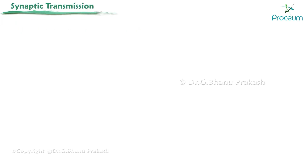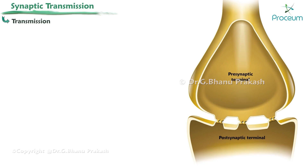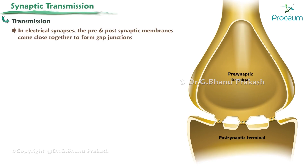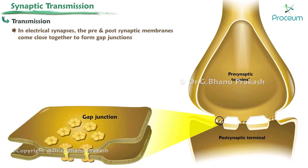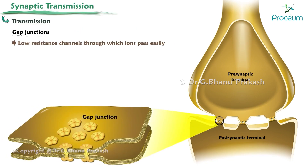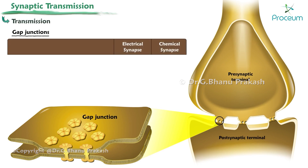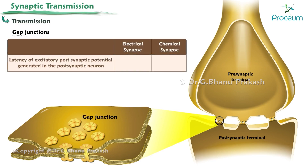Transmission in electrical synapses: The pre- and postsynaptic membranes come close together to form gap junctions. Gap junctions are low-resistance channels through which ions pass easily, allowing electrical activity of one neuron to pass directly to another. Transmission through electrical synapses differs from chemical synapses in several ways. The latency of excitatory postsynaptic potential generated in the postsynaptic neuron is shorter in electrical synapses than in chemical synapses.